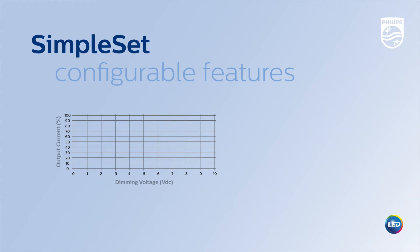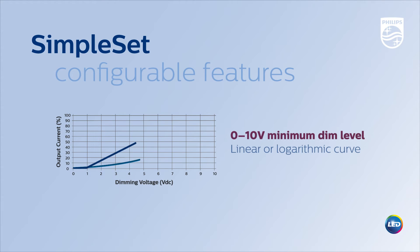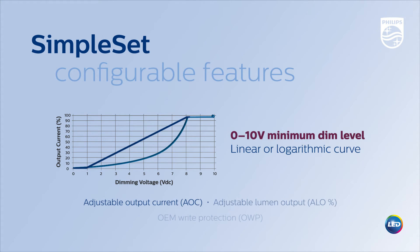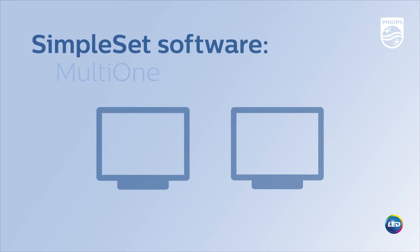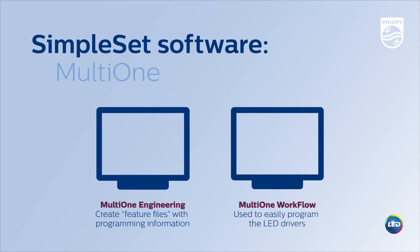The programmable features of Simpleset technology include the adjustable output current, the 0-10 volt minimum dim level with a choice of linear or logarithmic curves, adjustable lumen output percentage, and OEM write protection.